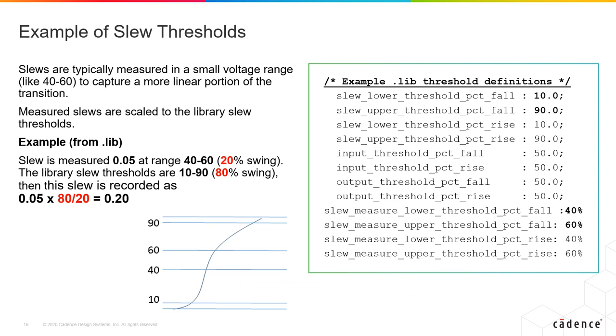Slews are typically measured in a small voltage percentage range, like 40 to 60, to capture a more linear portion of the transition. These measured slews are then scaled to the library slew thresholds.